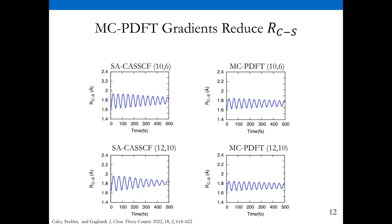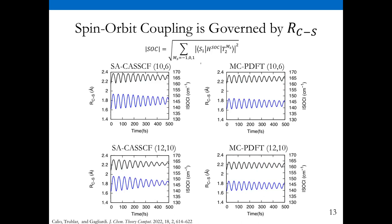This is important because it has a direct correlation on the spin-orbit coupling. Here in black is the spin-orbit coupling between S1 and T2 state. We see that spin-orbit coupling follows the trend of the carbon-sulfur bond. Within MCPDFT, when we have that dynamic correlation, we see a dampening in spin-orbit coupling primarily because of the geometry being different in MCPDFT than in CASSCF. That will directly affect the transition from S1 to T2 state.